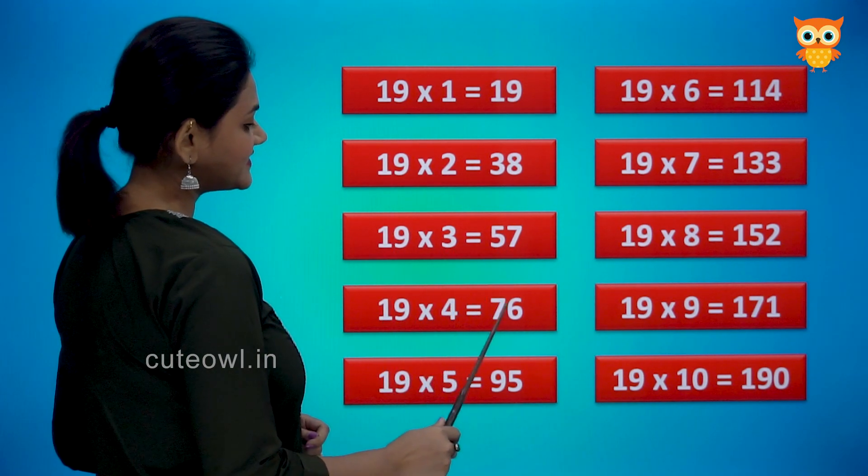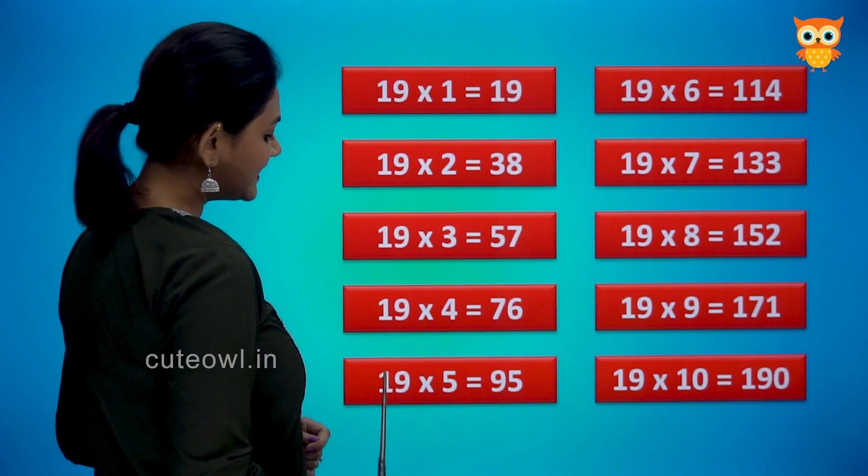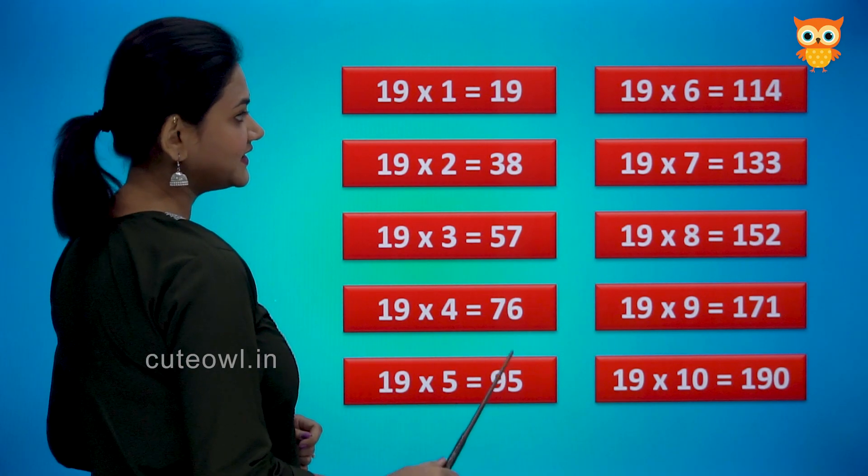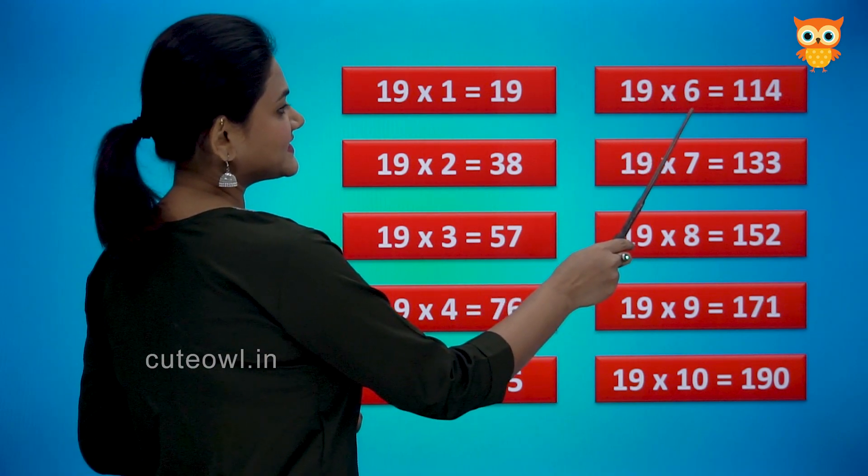19 fours are 76. 19 fives are 95. 19 six are 114.